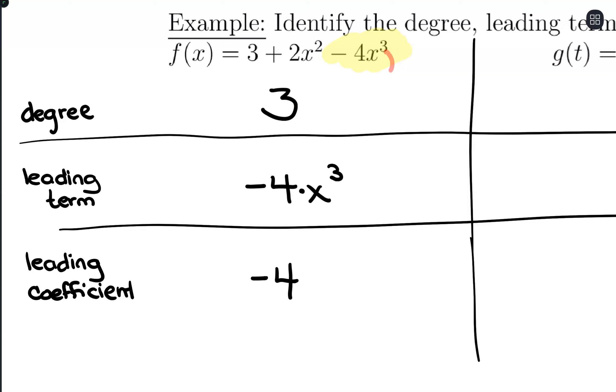The degree comes from the exponent. Negative 4x cubed is the entire term, our leading term. And the leading coefficient is that numerical part that's multiplying with our variable.